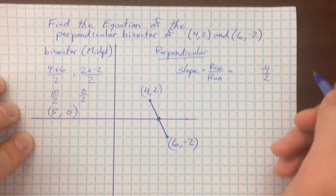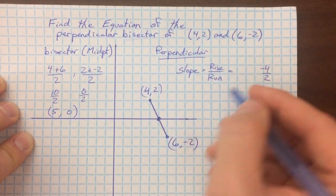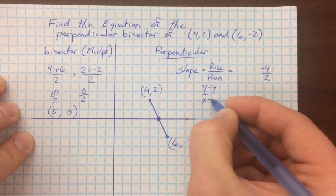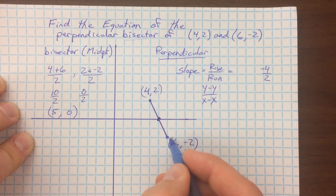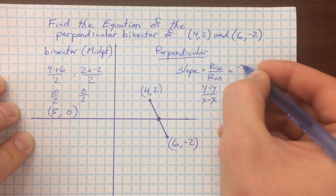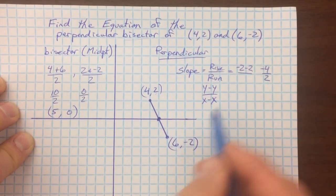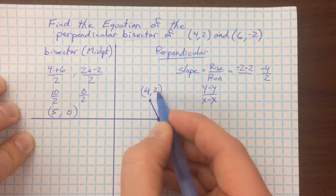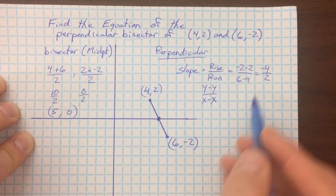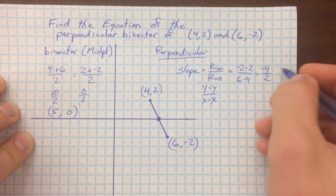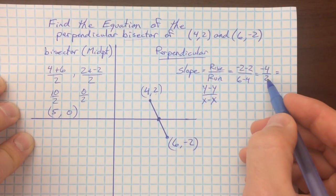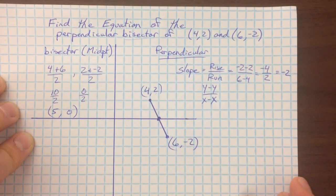How I calculate that is I'm going to do my y minus my y, and my x minus my x. I'm going to start with the rightmost one and do this y minus this y. So, negative 2 minus 2, and then start with the same one, 6 minus 4. So you get negative 4 and 2. If you start with the other point, you'll just get positive 4 divided by negative 2. But either way, the slope is negative 2.